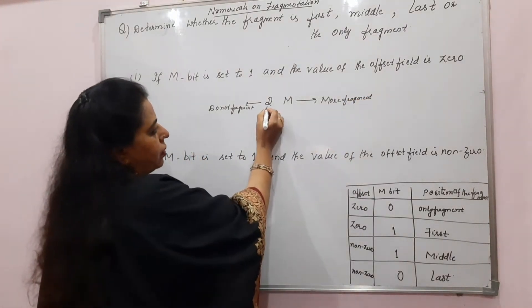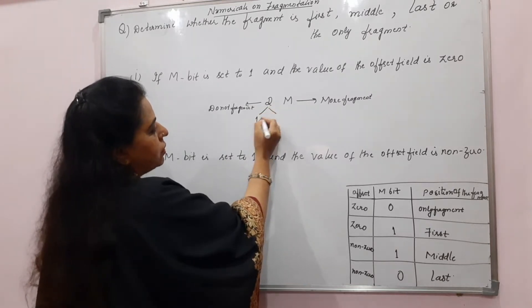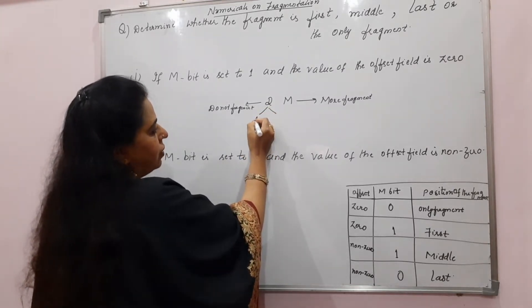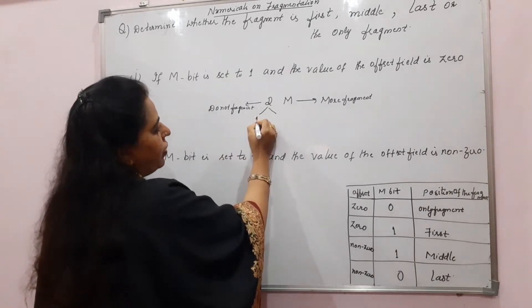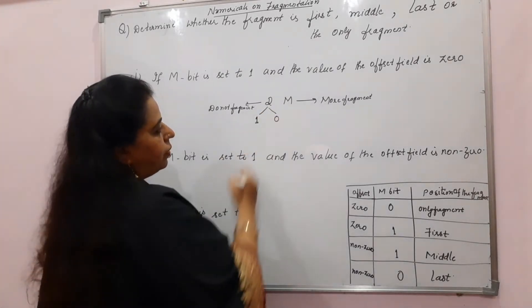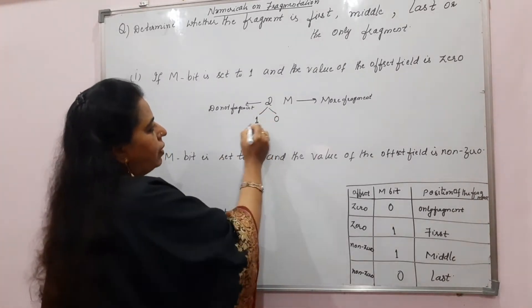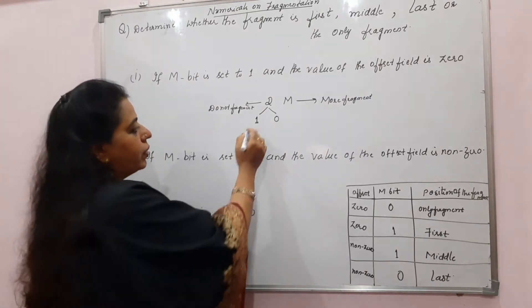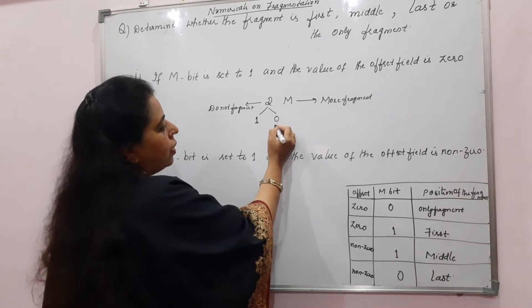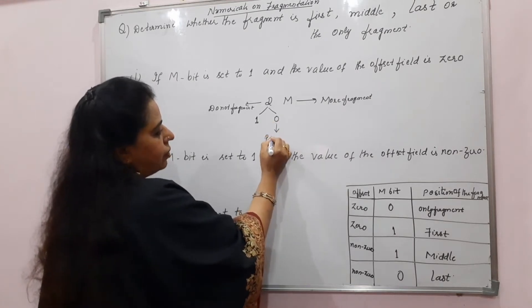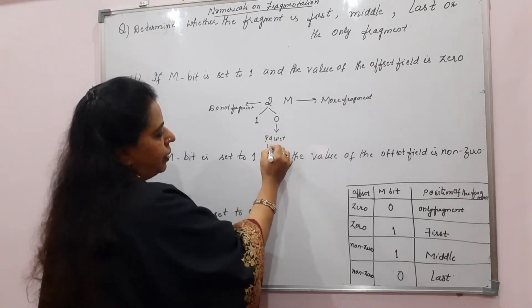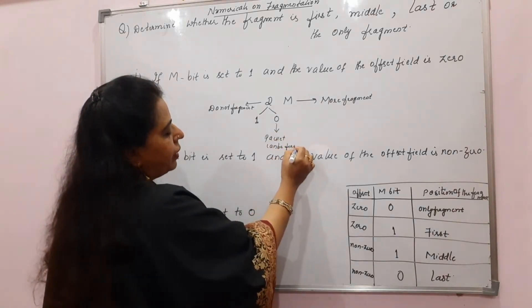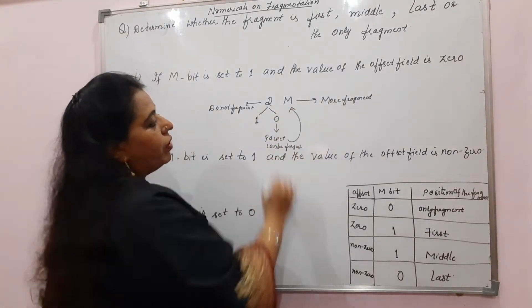In 'do not fragment', you have two possible values — 1 or 0 — because it is a flag field. When D is 1, it means do not fragment; the packet should not get fragmented. If D is 0, the packet can be fragmented. Only when D is 0 can the packet be fragmented, and then only the M bit will come into picture.